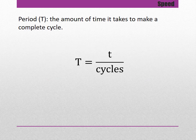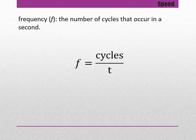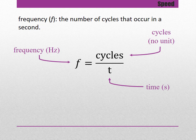The formulas for W1 and W2: Big T is period, measured in seconds — the amount of time it takes for one cycle to be completed. Small t is time, also measured in seconds. Cycles are the number of times the motion has repeated itself and carry no units. Frequency is symbolized by small f — it is the number of cycles that have occurred in one second, measured in Hertz. Frequency equals cycles divided by time.